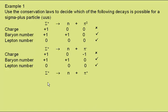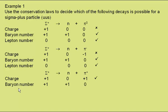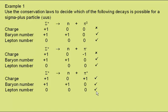The third decay would be for the sigma plus to become a neutron and a pi plus. For charge, we have plus one for the sigma plus, zero for the neutron, plus one for the pi plus — so charge conservation is satisfied. For baryon number, the sigma plus is a baryon, as is the neutron; the pi plus is a meson with zero baryon number, so this is possible. And for lepton number, they're all not leptons and so have zero lepton number — this is possible. So this third decay is the only one which could be observed.